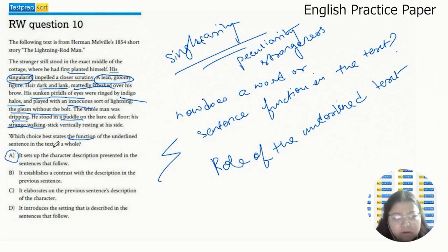It establishes a contrast with the description in the previous sentence. The previous sentence says stranger who stood in the exact middle of the cottage where he had first planted himself. So it doesn't actually describe anything. It just says a man was standing in the middle of the cottage. And it certainly doesn't present any contrast. So B is incorrect.